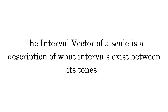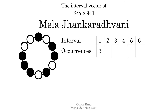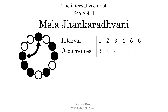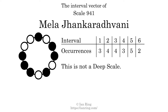The interval vector of a scale is a description of what intervals exist between its tones. There are 3 intervals with the size of 1 semitone, 4 intervals with the size of 2 semitones, 4 intervals with the size of 3 semitones, 3 intervals with the size of 4 semitones, 5 intervals with the size of 5 semitones, and 2 intervals with the size of 6 semitones. Each interval does not appear in this scale a unique number of times, so this is not a deep scale.